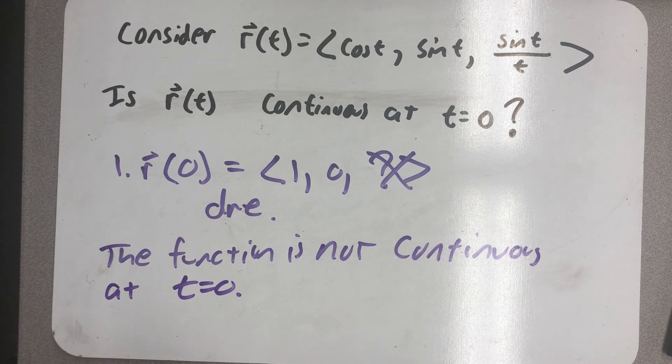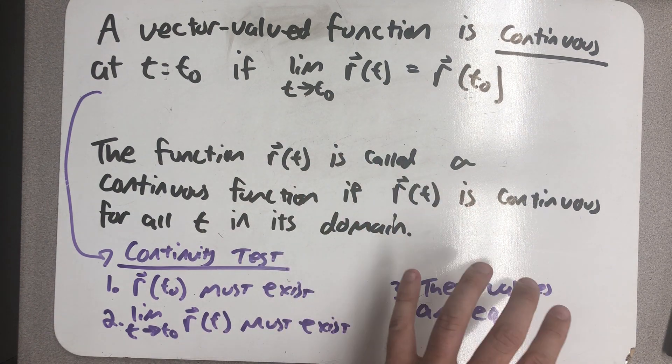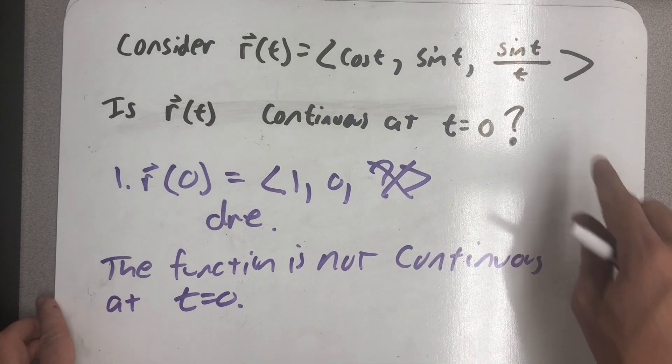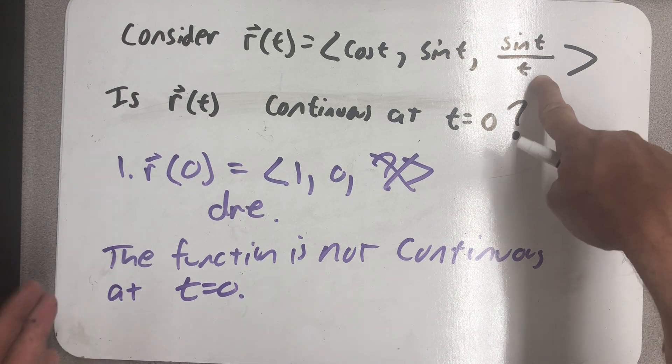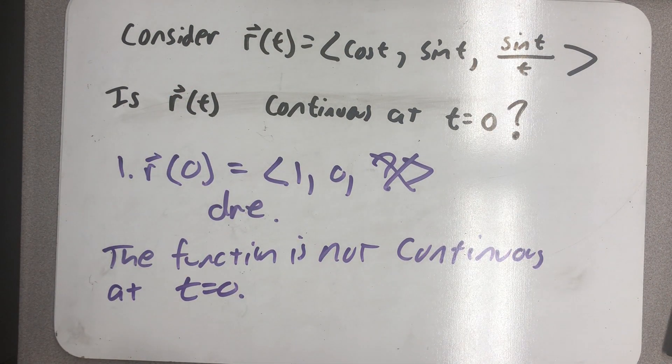Interestingly enough, based on that last definition we saw, a function is called a continuous function if it's continuous over its own domain. Well, very clearly, zero is not in the domain of this function. It's continuous everywhere else, so I would still call this a continuous function, even though it's not continuous at zero.